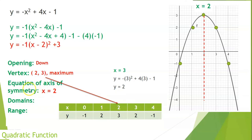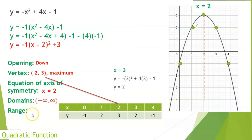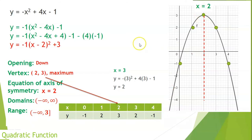The domain still extends infinitely — all real numbers. The range: since the graph opens downward, the highest point is 3 (the vertex) and the graph extends infinitely downward, so the range is (−∞, 3].